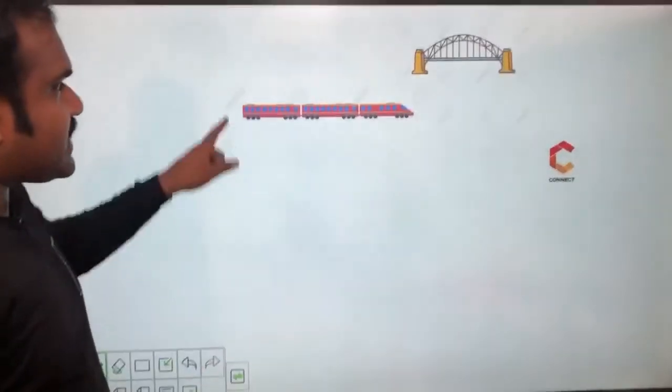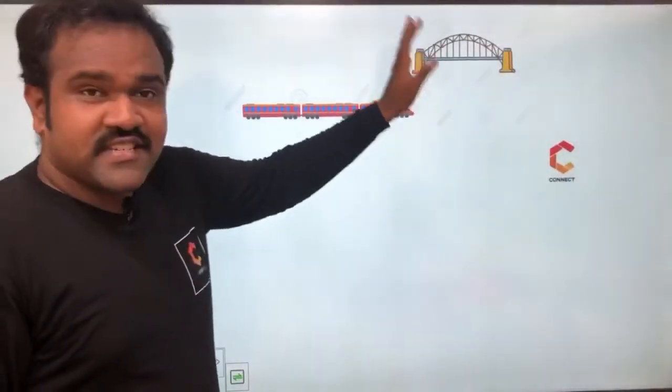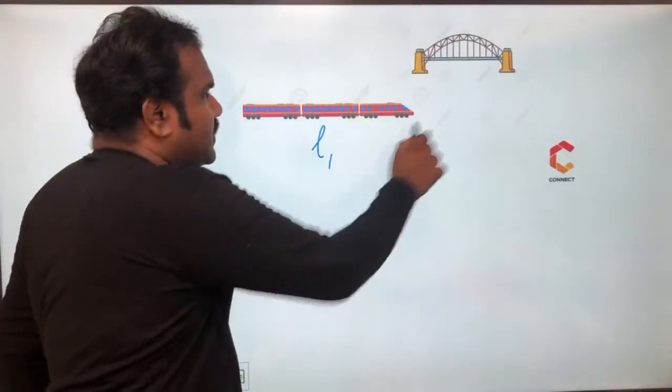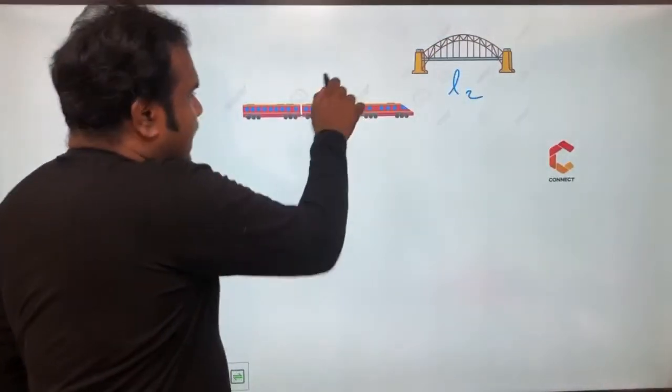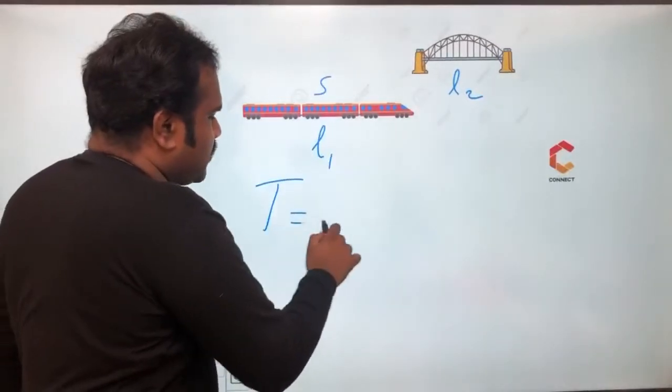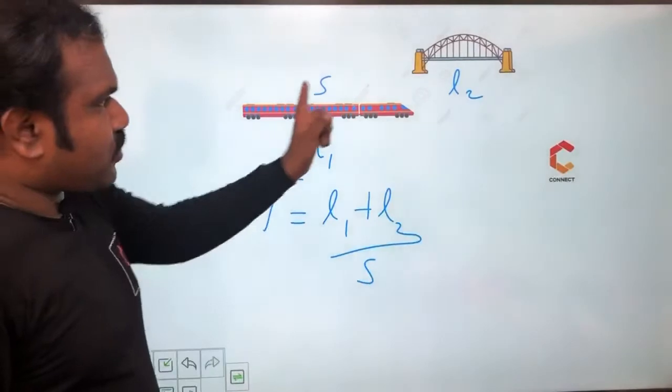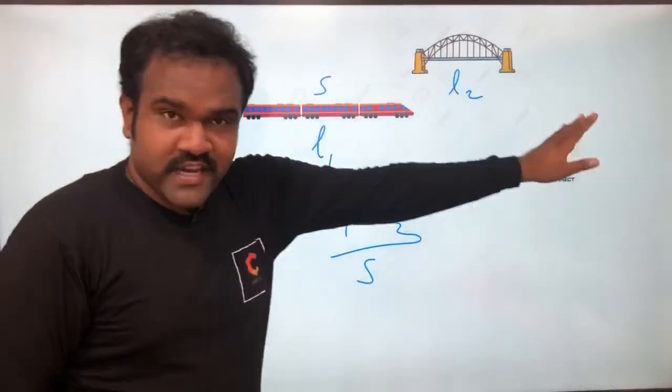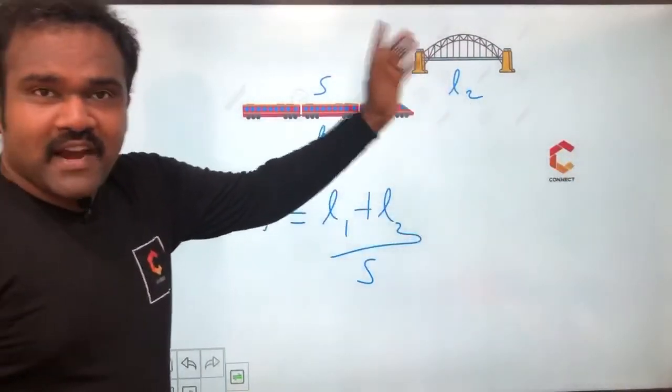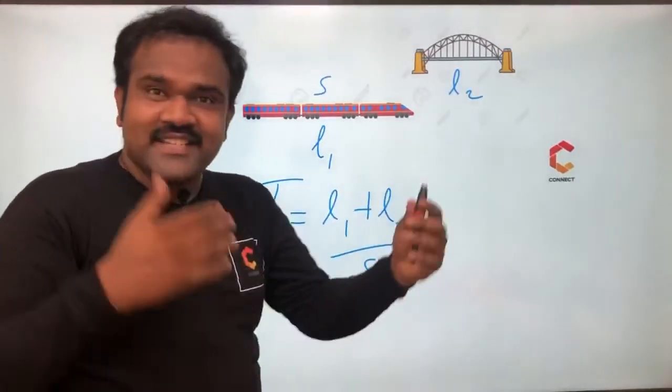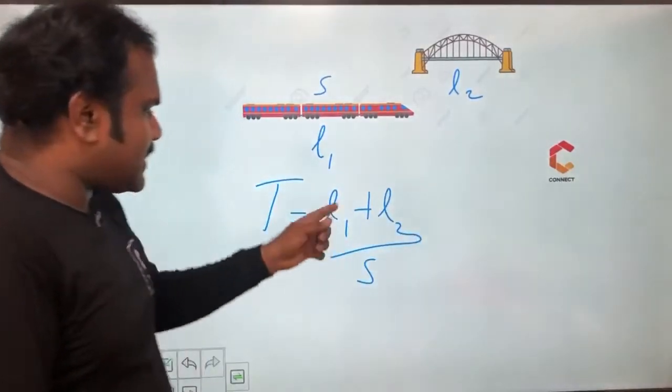Case number 2 is a train crossing a stationary object with length. So train's length is L1, this is L2. In this case, the time taken is equal to L1 plus L2 by S because it has to cross the bridge as well as it has to come outside. So it can be a bridge or a platform or a tunnel or another standing train or something like that. So L1 plus L2 by S.